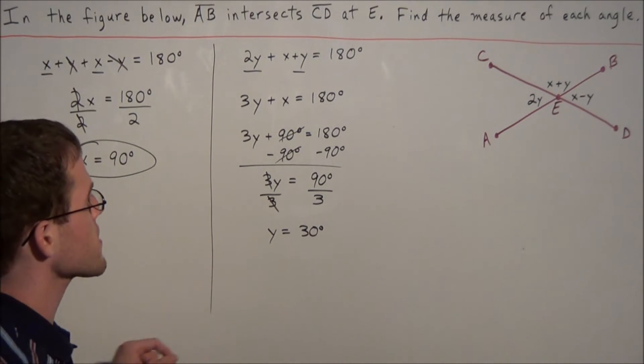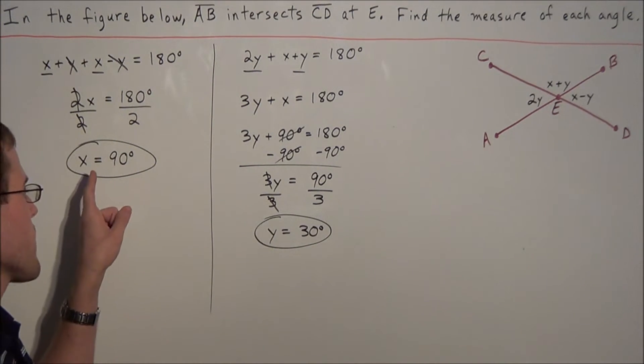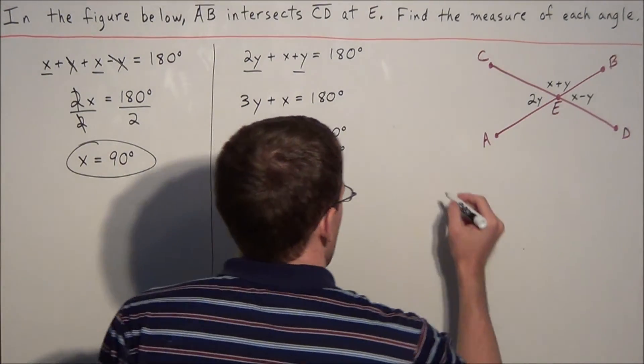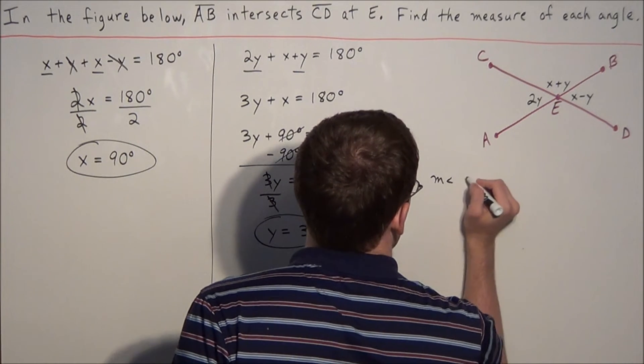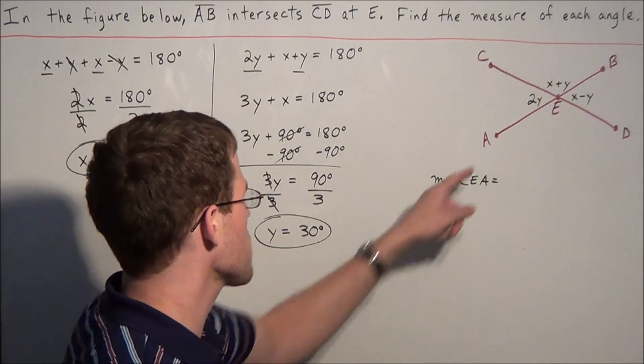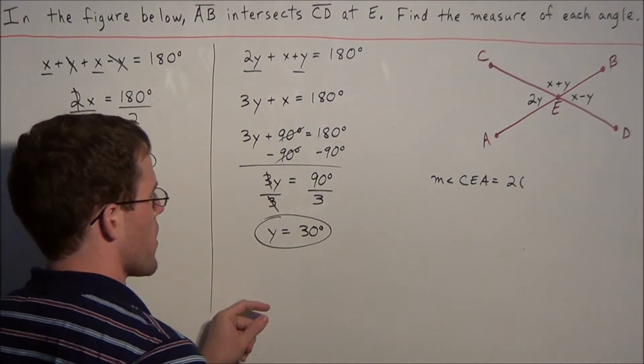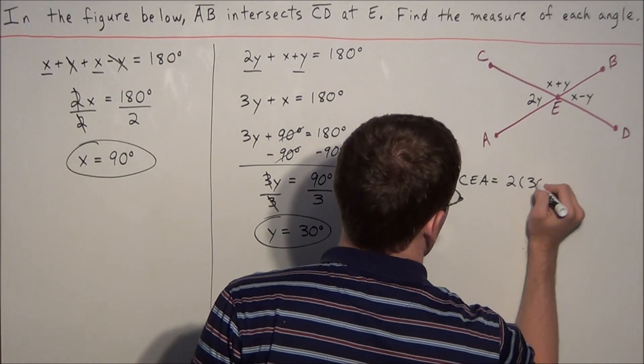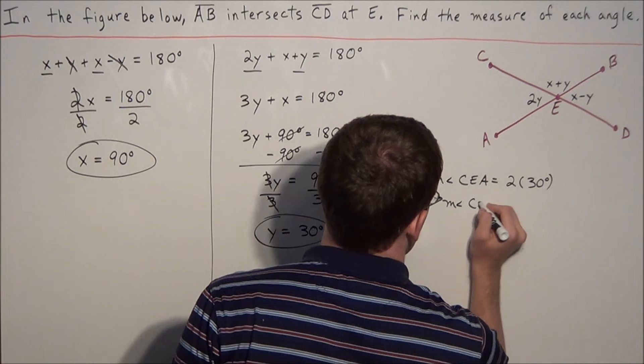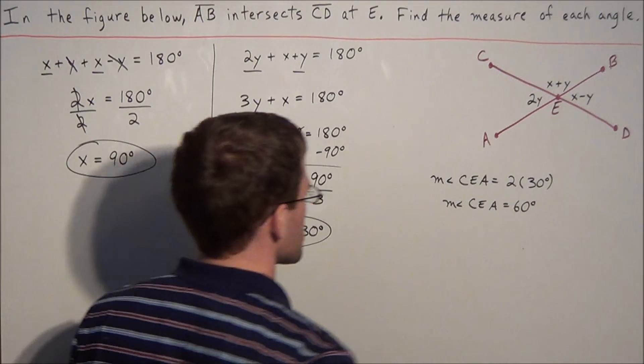The question was asking us to find the measure of each angle. So angle CEA, the measure of this angle is equal to 2 times Y, which is 2 times 30 degrees. So the measure of angle CEA is equal to 60 degrees.